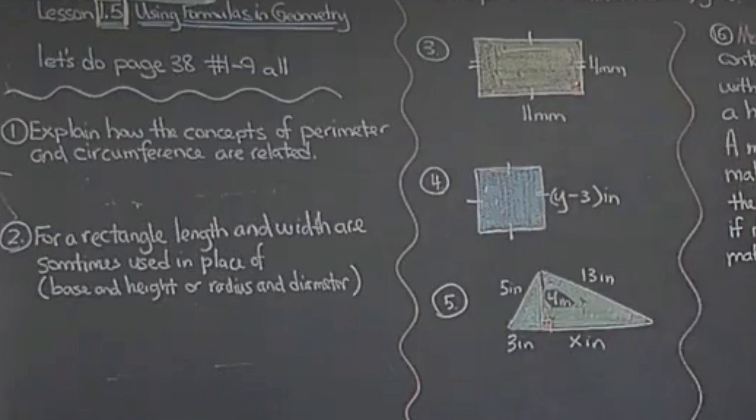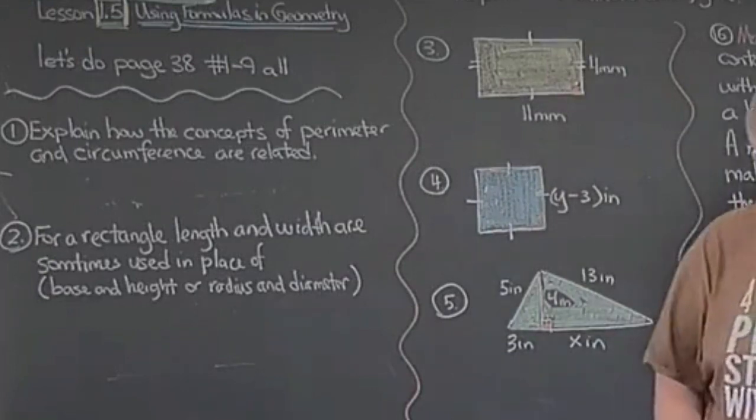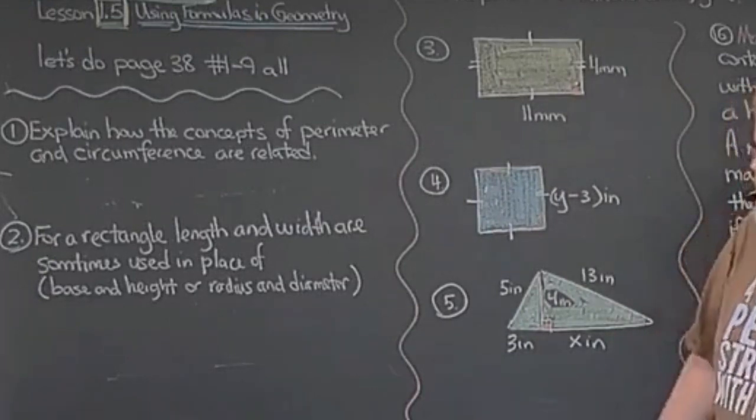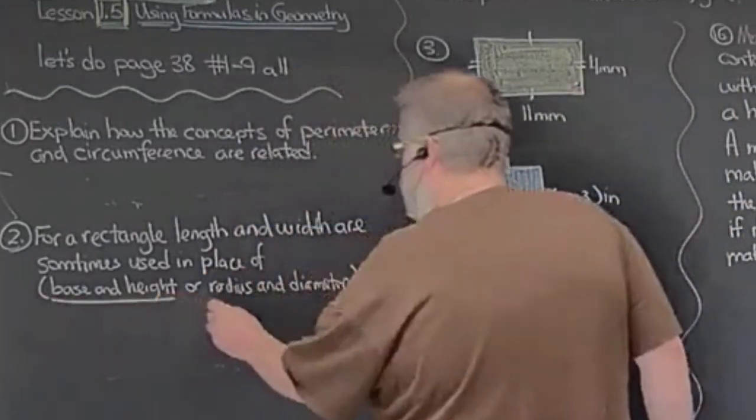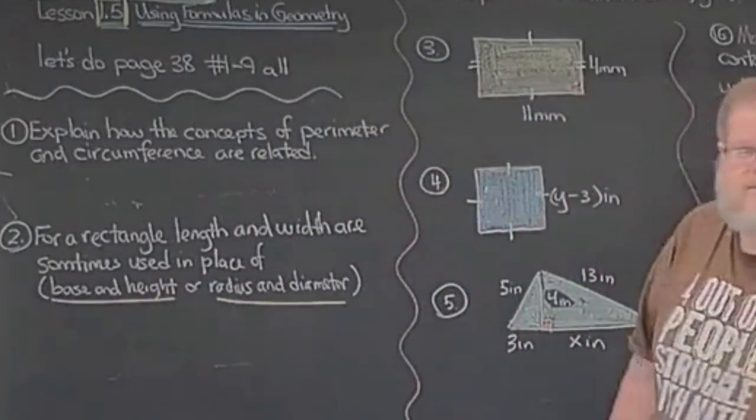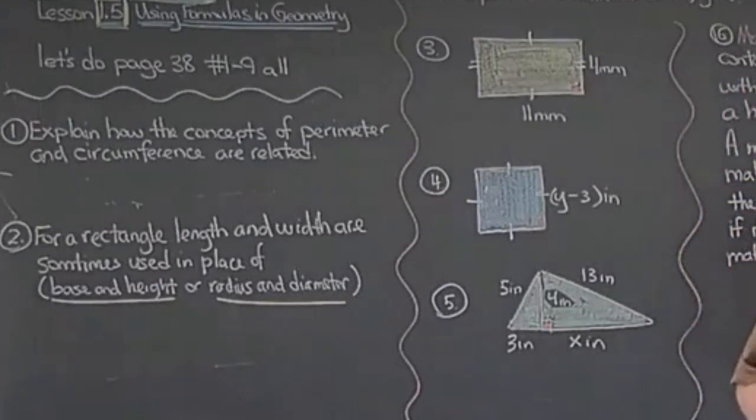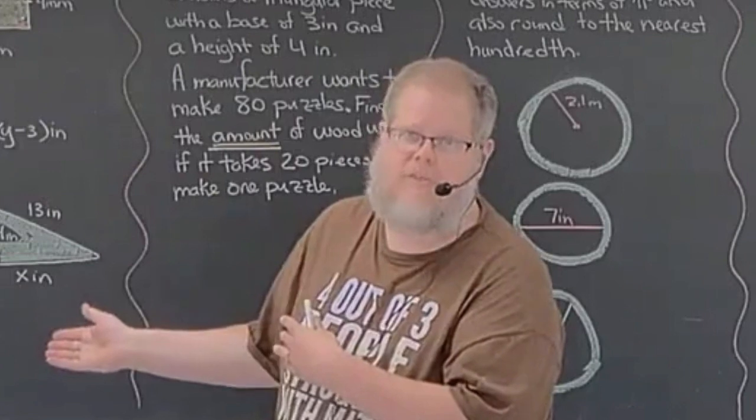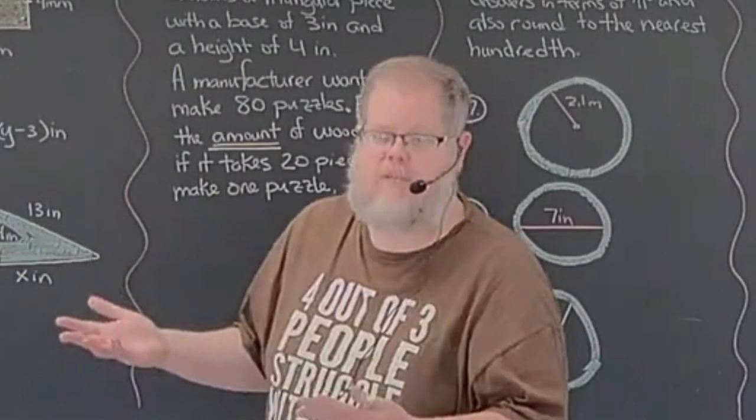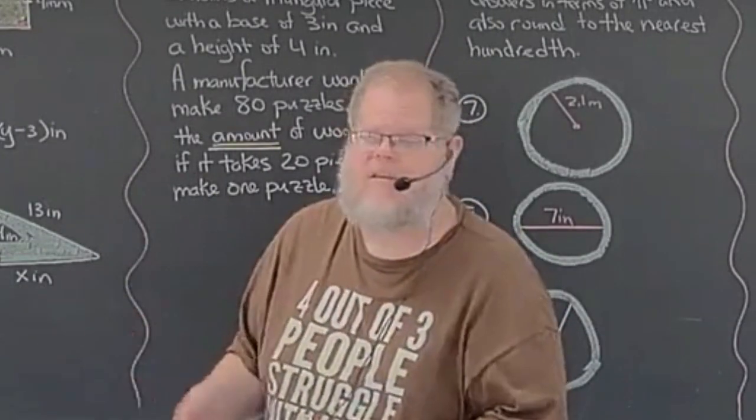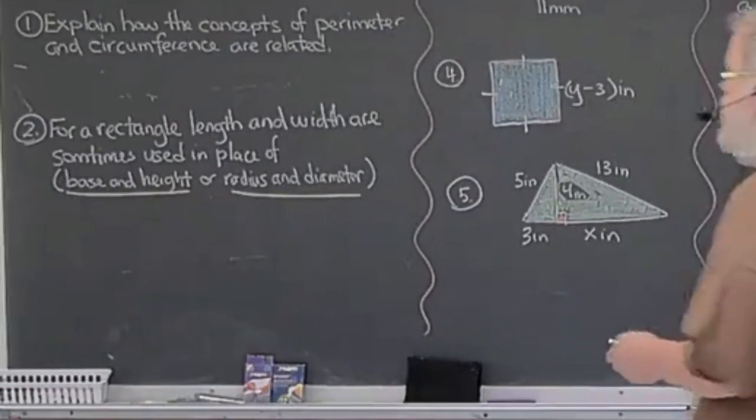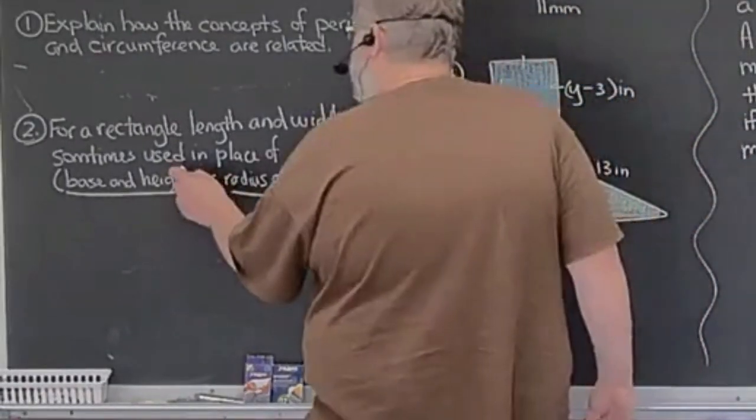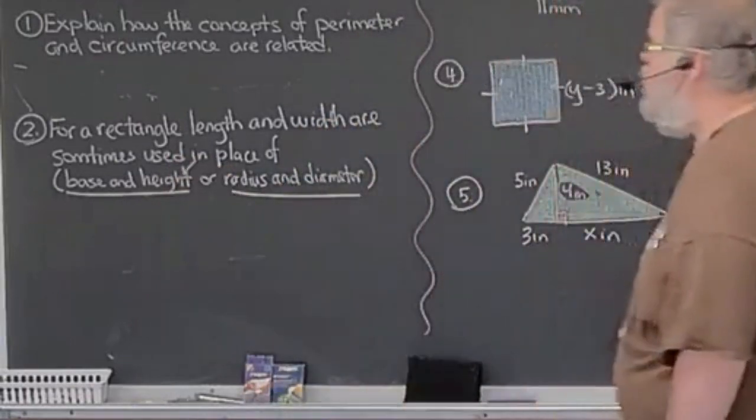For a rectangle, length and width are sometimes used in place of, we have a choice to make. Is it base and height or radius and diameter? Which one of those is the replacement? Well, what does radius and diameter have to do with? Those have to do with circles. So since this is a rectangle, the answer is base and height. Sometimes we replace length and width with base and height.